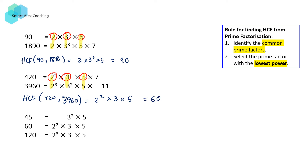We can also use this method to find the HCF of a set of three or more numbers as well. So in the last set, I've got 45, 60, and 120. We're going to go through the list and identify the common prime factors — in this case, it happens to be 3 and 5 only.